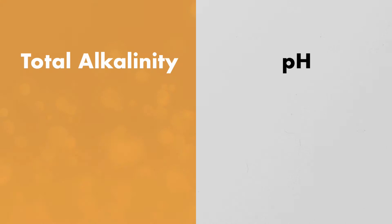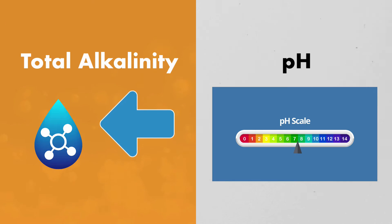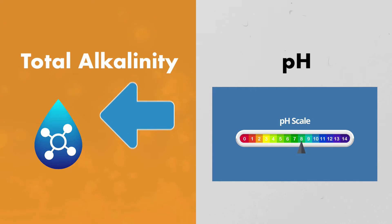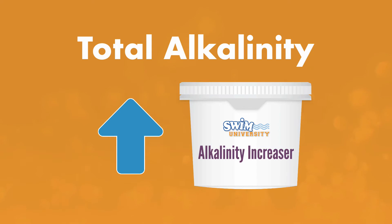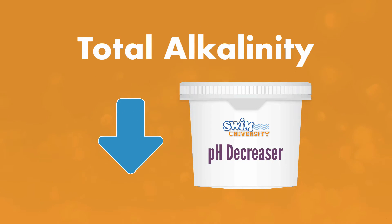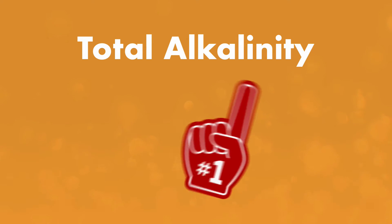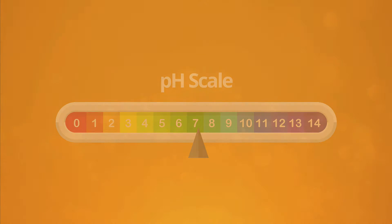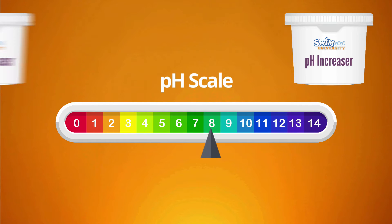Here's why they work together: because total alkalinity buffers acidity, adjusting the alkalinity first may be enough to bring the pH in line. If you need to increase alkalinity, you can use an alkalinity increaser. However, if you need to bring the alkalinity down, you'll actually use a pH decreaser — because bringing pH down also brings alkalinity down. That's why we adjust the alkalinity first.